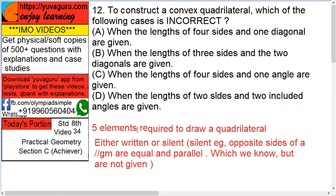Here, to draw any quadrilateral, you need five elements. Any. Now, either these five elements can be written or some of them can be silent.